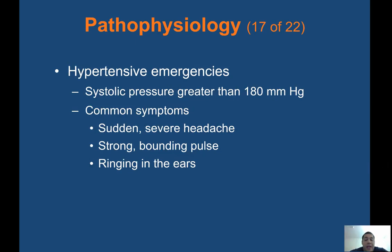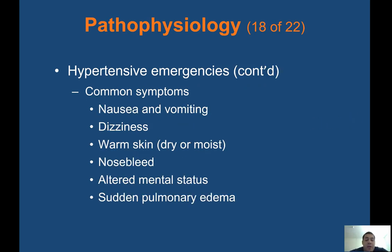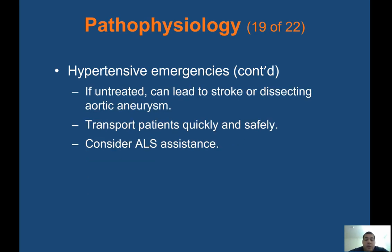Hypertensive emergency occurs when systolic pressure is greater than 180. Common symptoms include sudden severe headache, strong bounding pulse, and ringing in the ears. When you see a pressure over 180, ask about history of hypertension or medications. The high pressure can put force on arteries in the head — if one bursts, it could cause a stroke. Other symptoms include nausea and vomiting, dizziness, warm skin, nosebleed, altered mental status, and sudden pulmonary edema or flash edema. If untreated, it can lead to a stroke or dissecting aortic aneurysm. Transport patients quickly and consider ALS assistance.